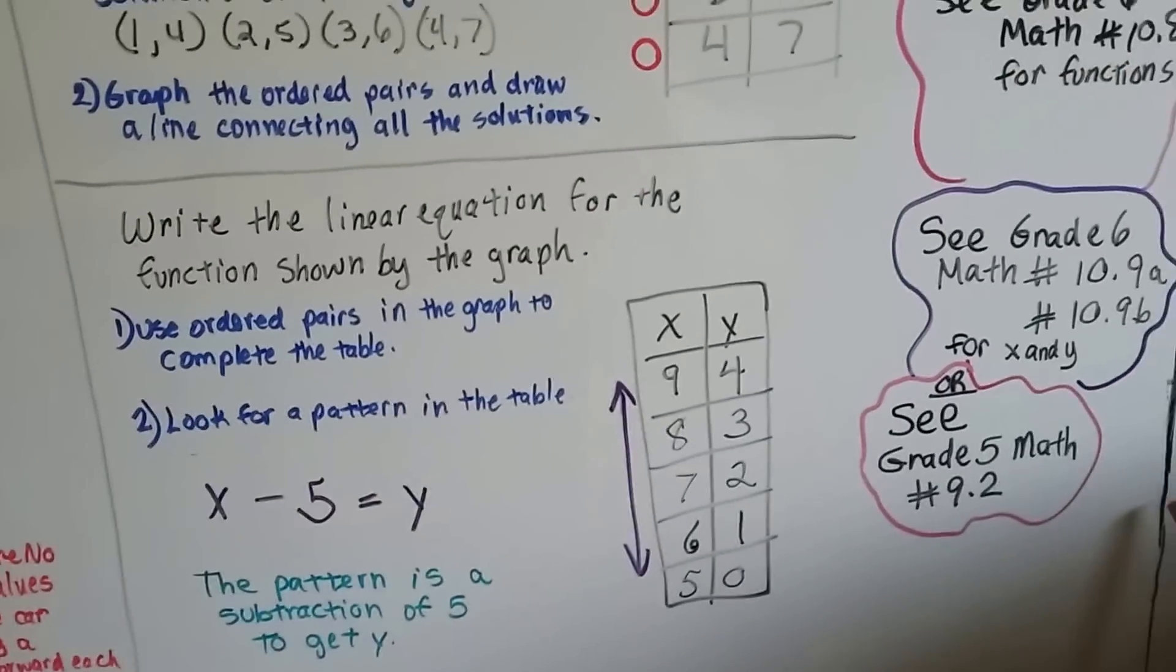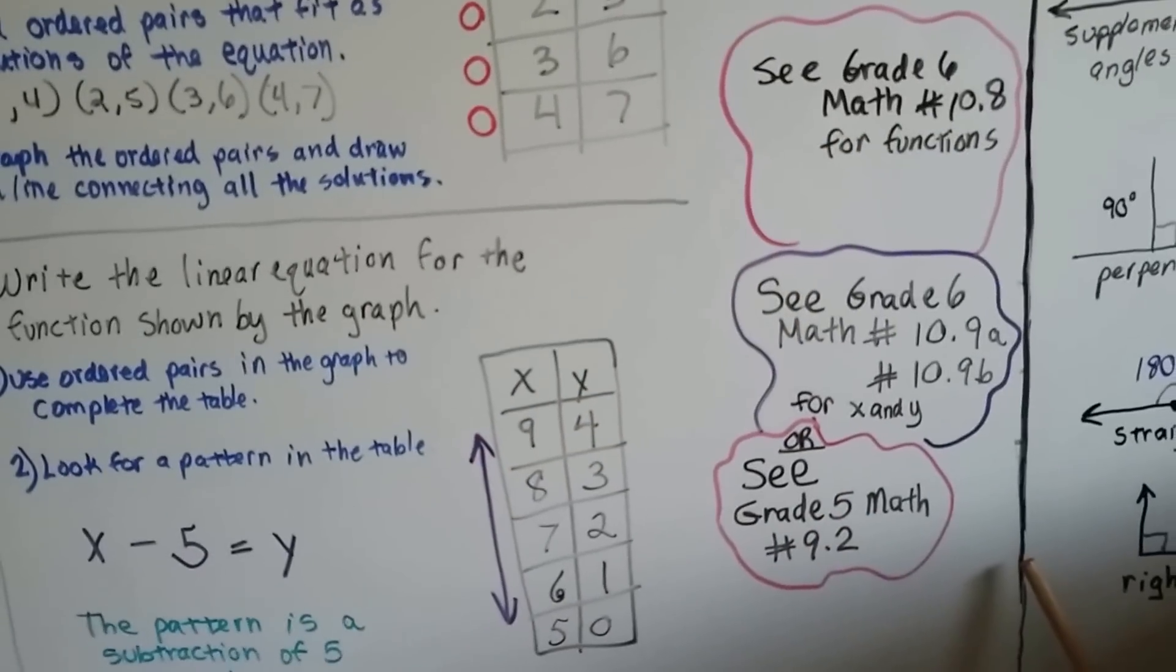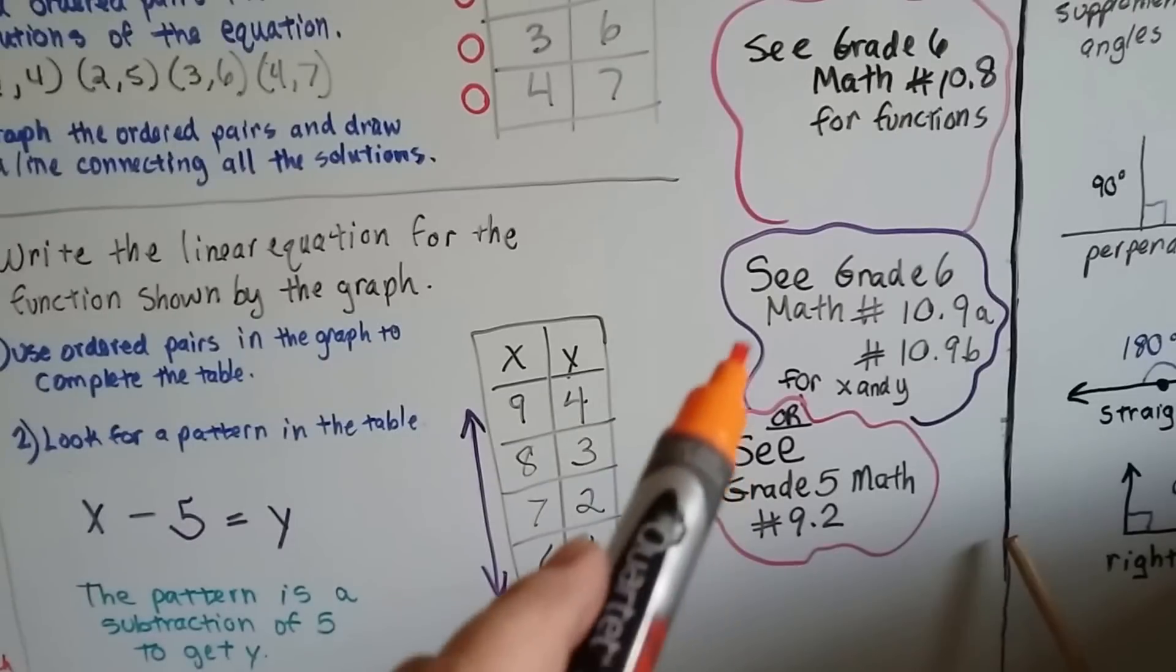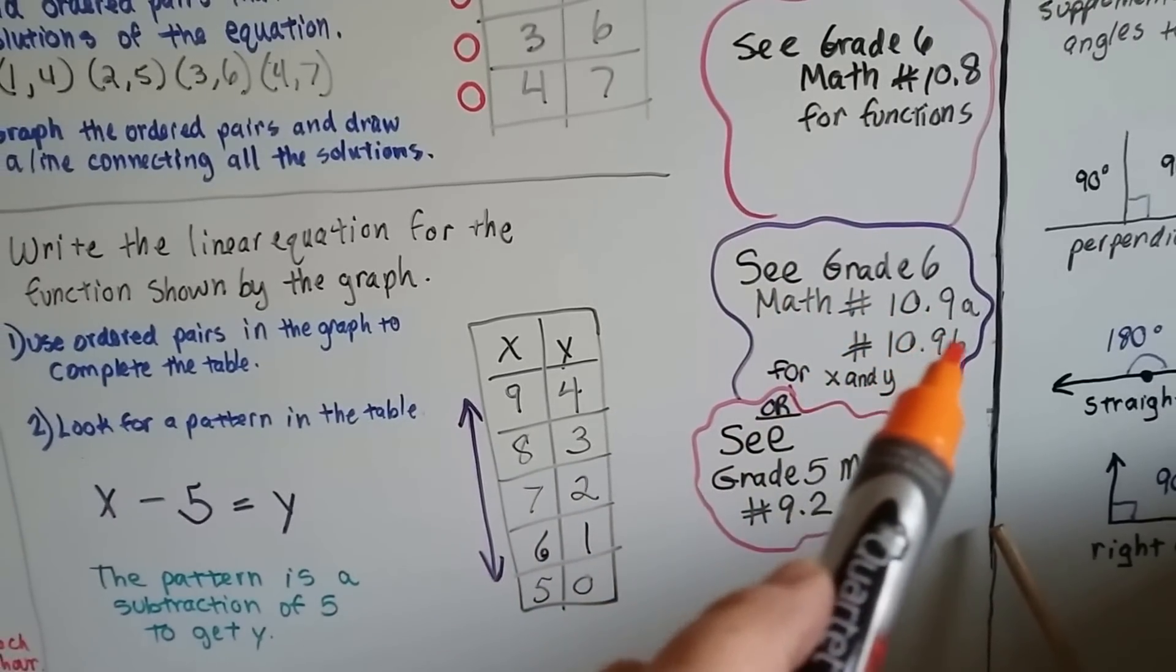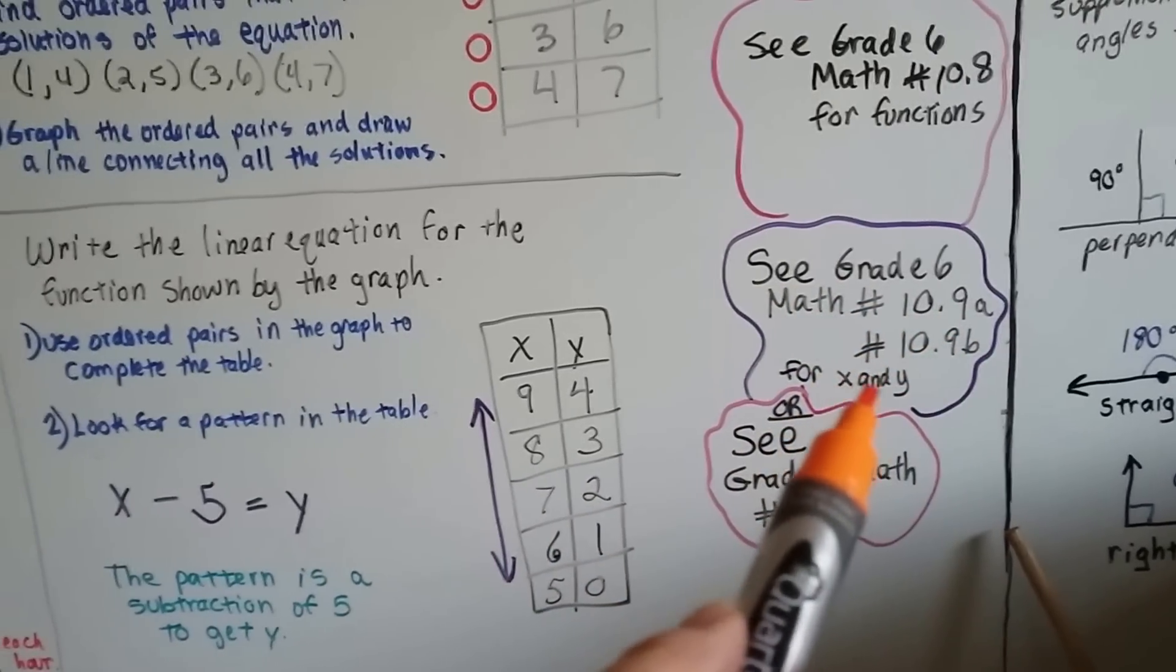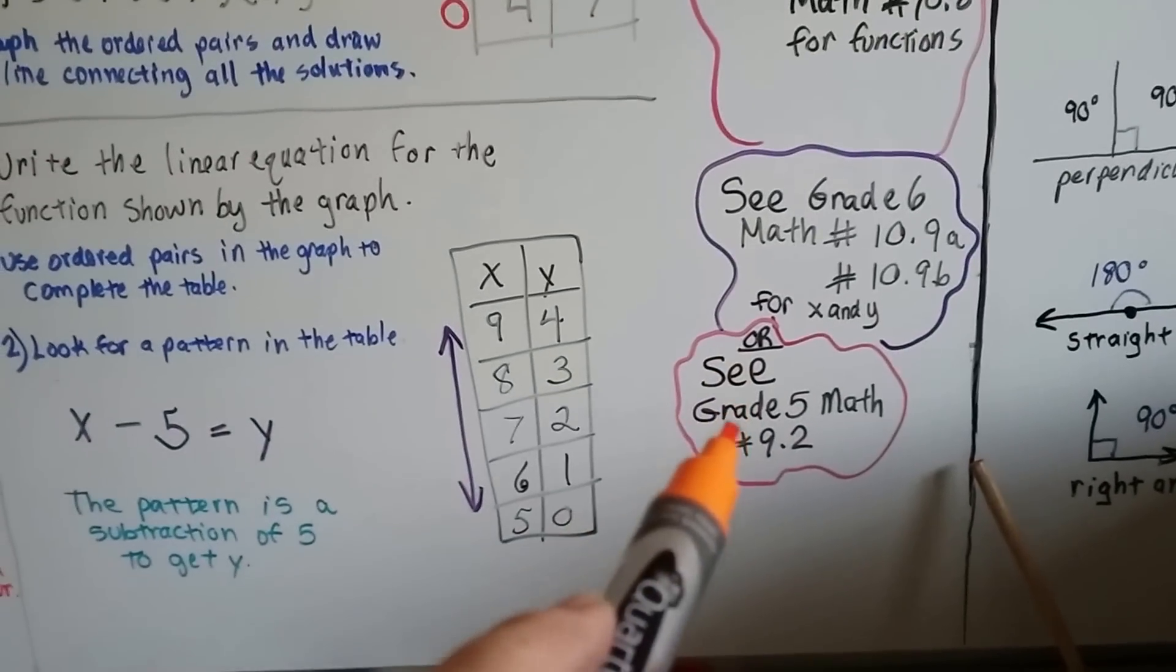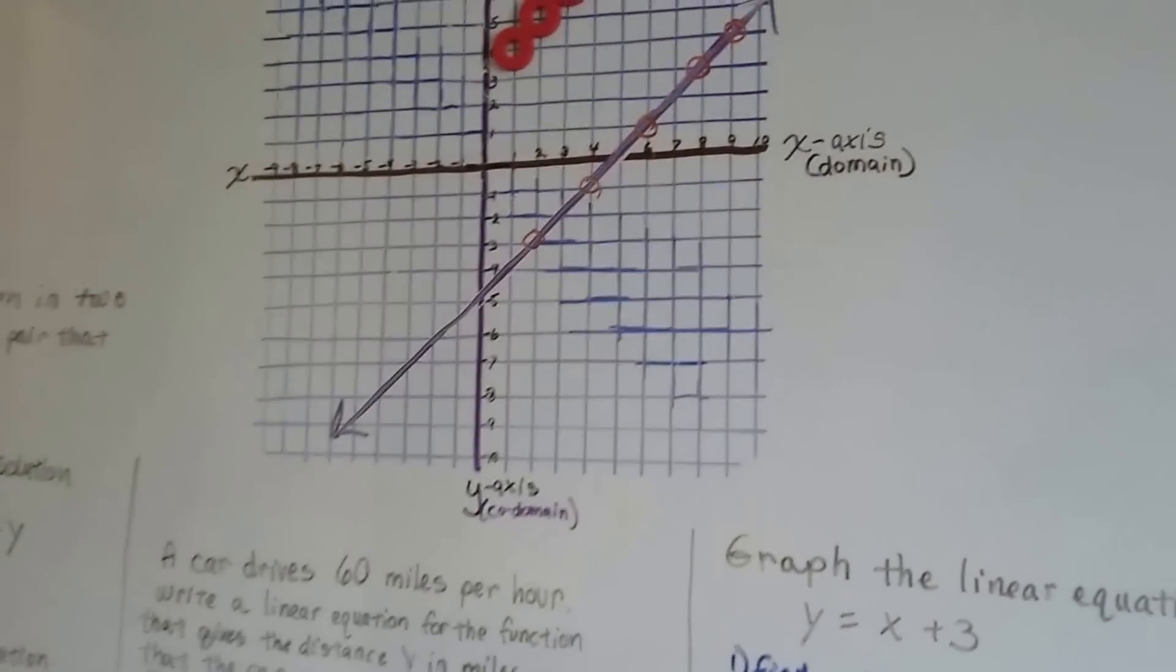If you have any questions about any of this, you can go back to the grade 6 math number 10.8 because we're in 10.11 right now. And that explains functions and these guys. Or you could watch the grade 6 math number 10.9a or 9b for the x and y and the coordinate plane. And it'll explain this coordinate plane. And if that's too difficult, you can go back to the grade 5 math number 9.2. And it'll explain it a little bit easier for you.